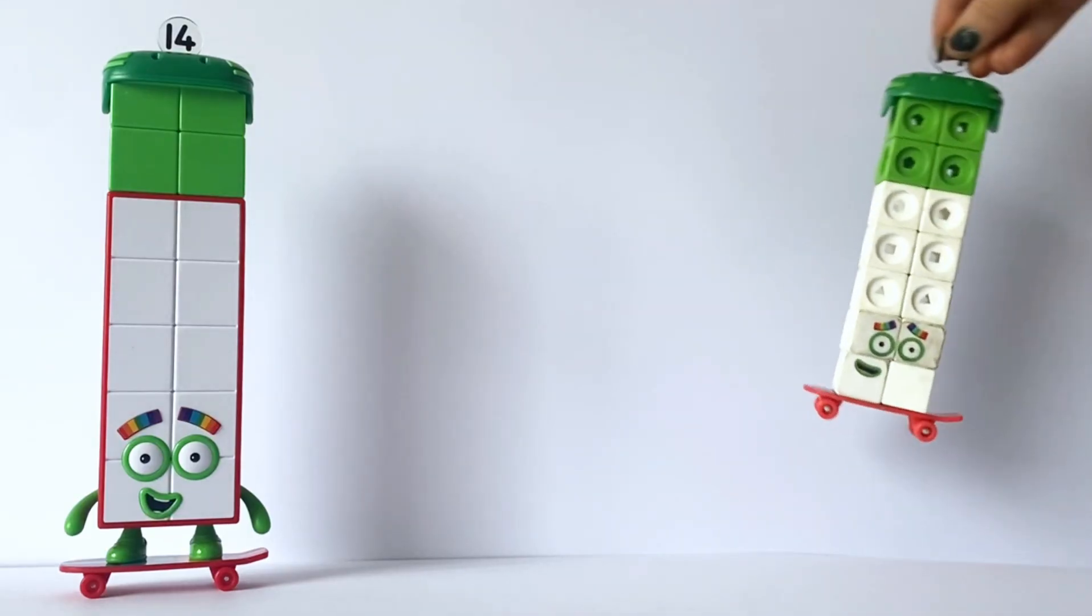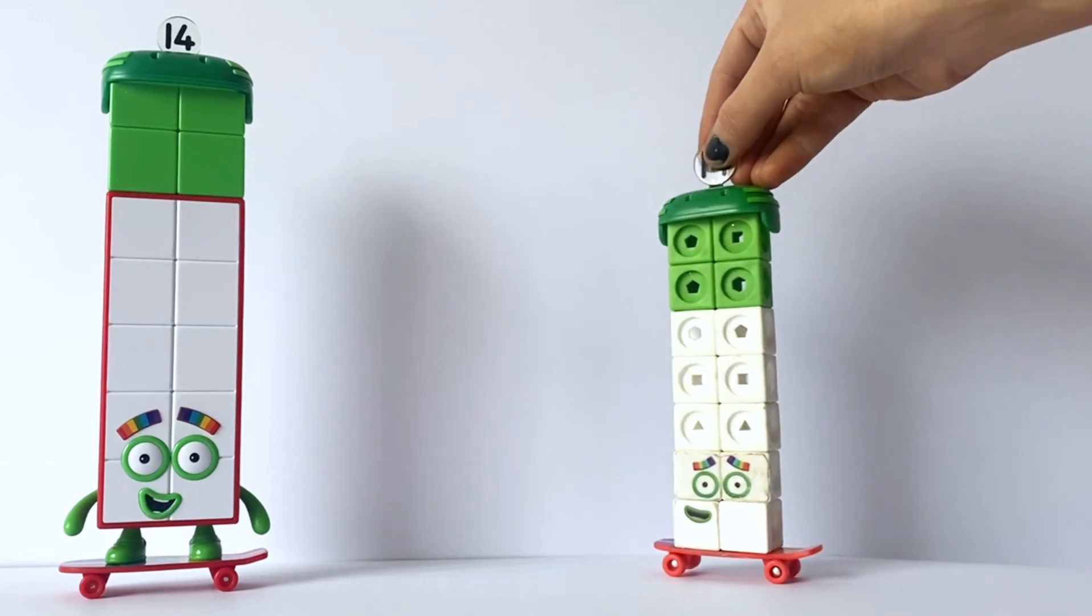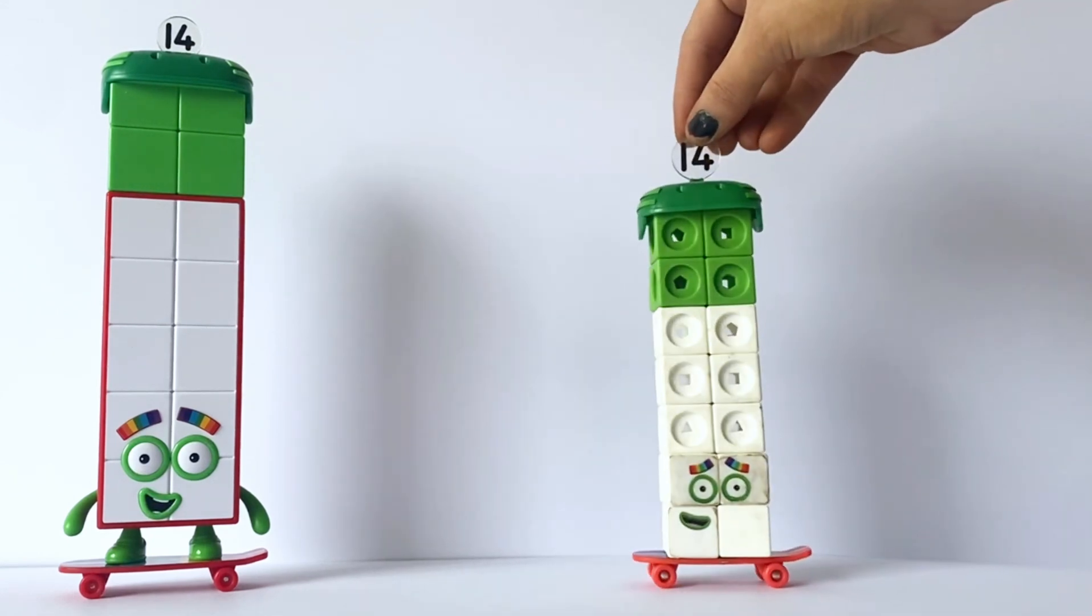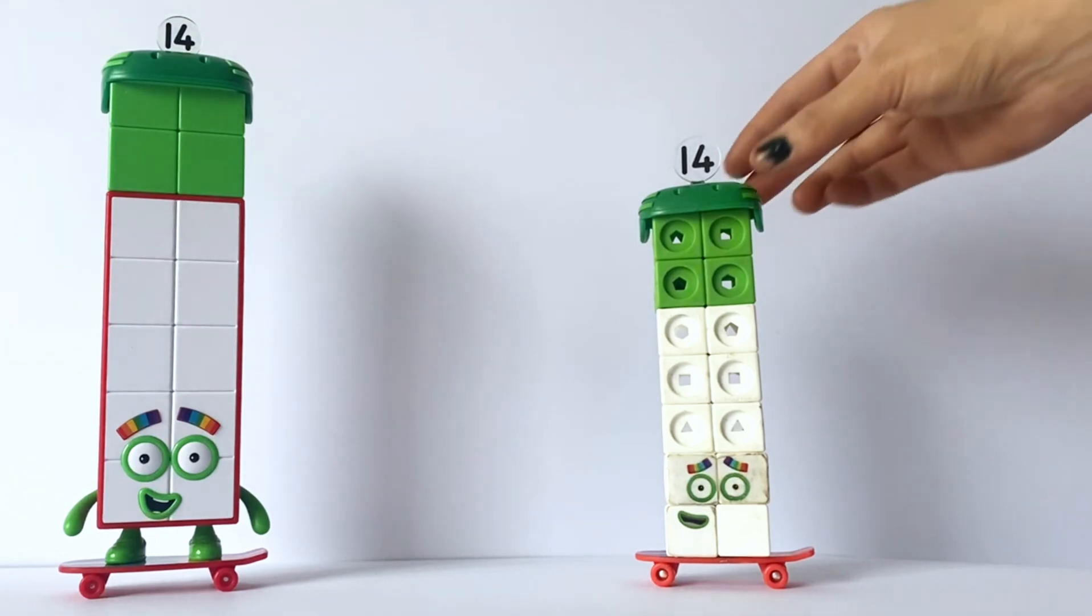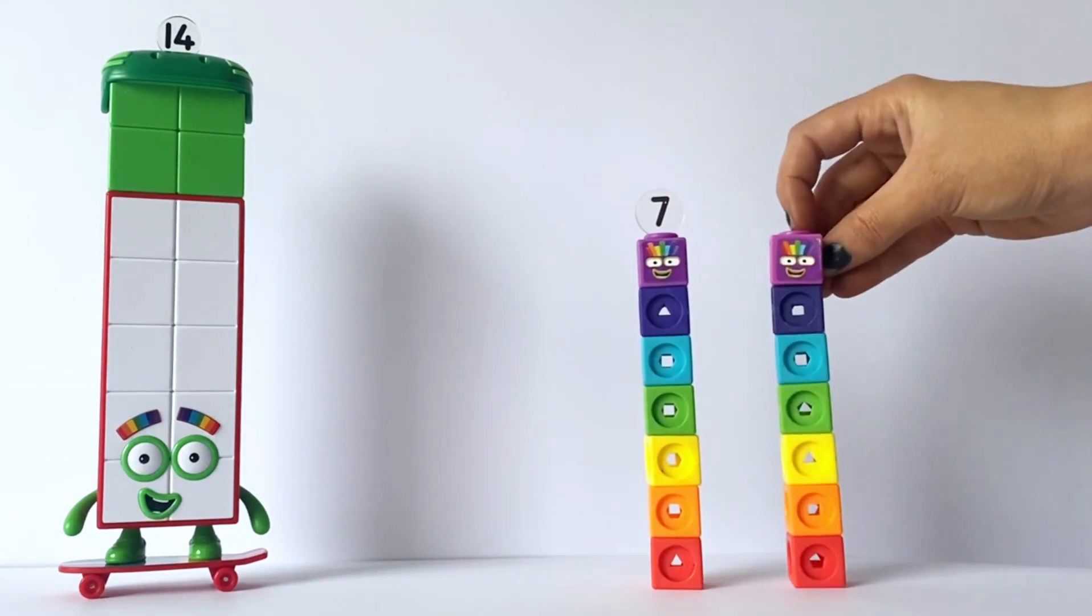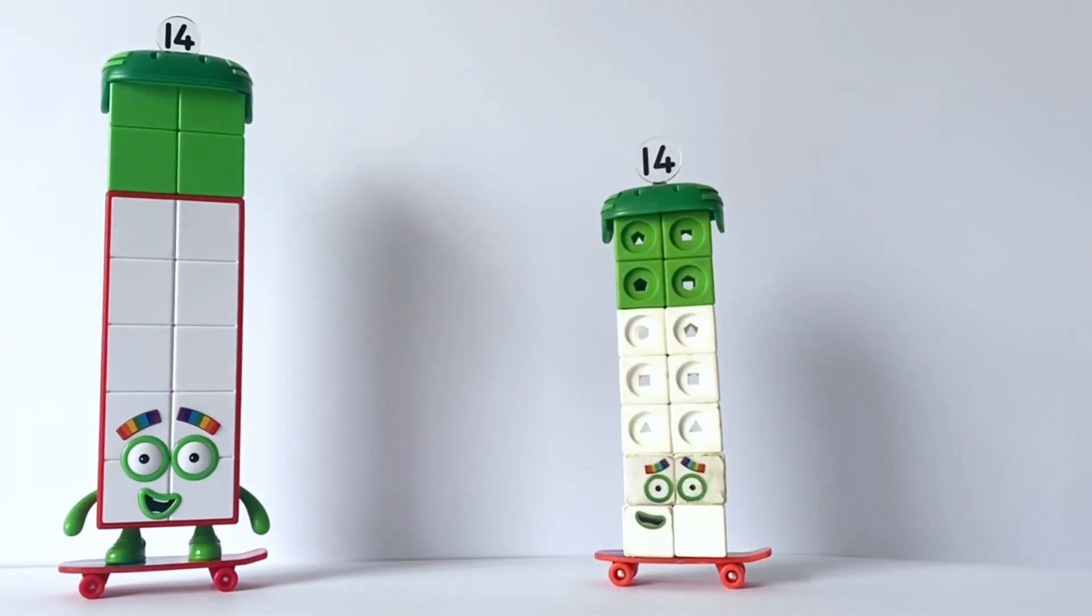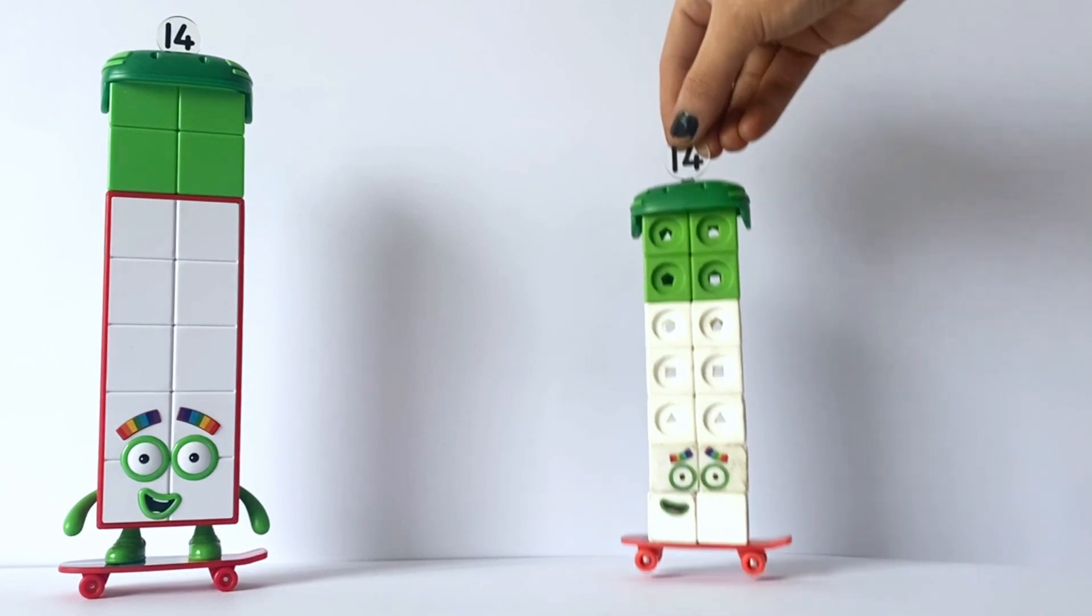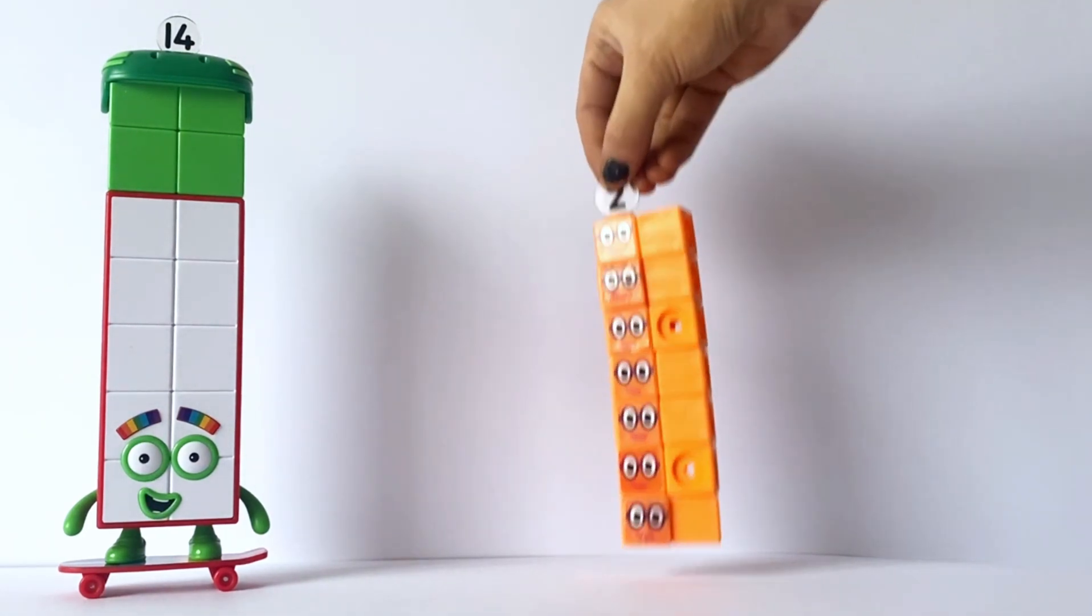So here is our NumberBlock 14 as a Mathlink cube as well with his skateboard and helmet. Just like before we know that 14 is 2 lots of 7. NumberBlock 14 can also be 7 lots of 2's.